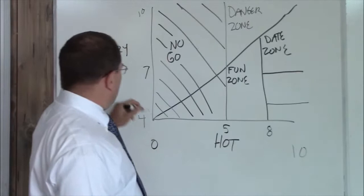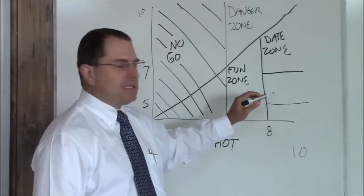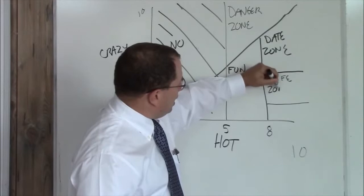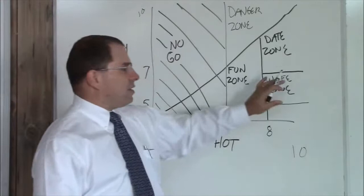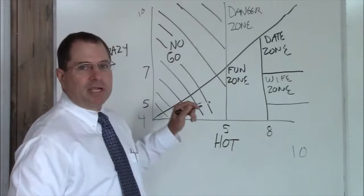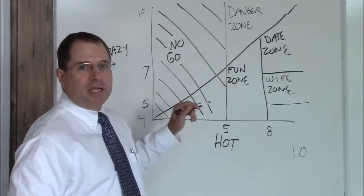Now, above an eight hot, and between about a seven and a five crazy. This is your wife zone. Okay? When you meet this girl, you should consider a long-term relationship. This zone is not scaled to size. This is a representation and not an actual, this is not a pie chart showing you how many of these people are out there. This is simply a representation of what you're after. You want to be five to seven crazy, above an eight hot. That's your wife's zone.